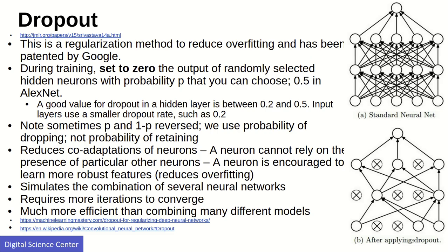Dropout is a regularization technique used to reduce issues when creating a model. The most common issue is overfitting: when you train a network with specific data, you might get 98% accuracy at the training step, but when you input testing data, the accuracy suddenly drops to around 40–50%. This means the model is overfitted to the training data and cannot generalize. Regularization techniques like dropout are used to avoid this.